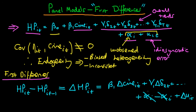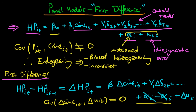By taking first differences we have removed the unobserved heterogeneity term. In principle, if the covariance of the change in crime rate for city i at time t with the new error term delta u it equals zero, and assuming no remaining heterogeneity issues, we should obtain consistent estimates by estimating pooled OLS on this first difference system. Estimating pooled OLS on the first difference system is what we refer to as the first differences estimator.